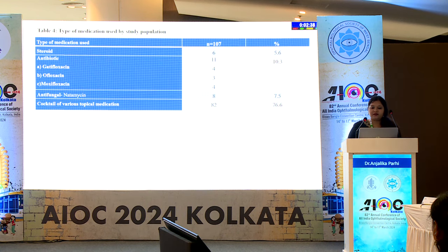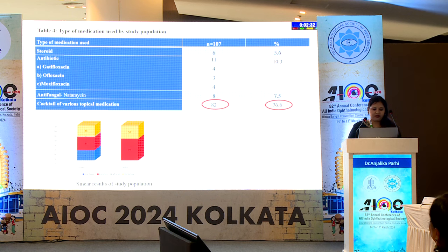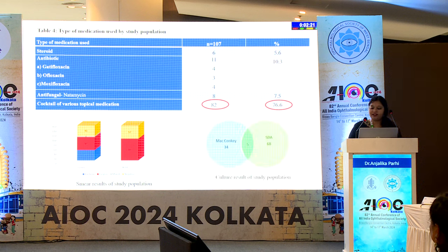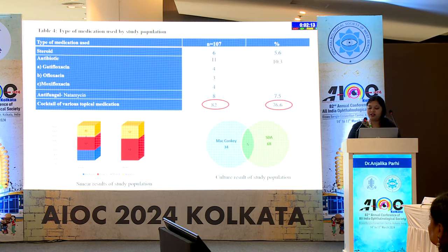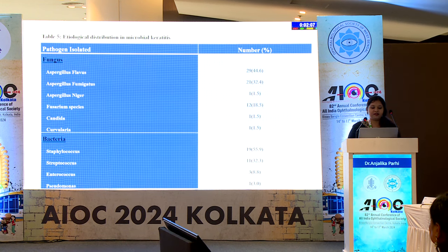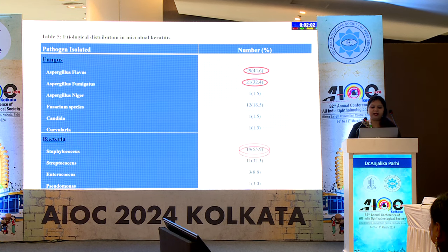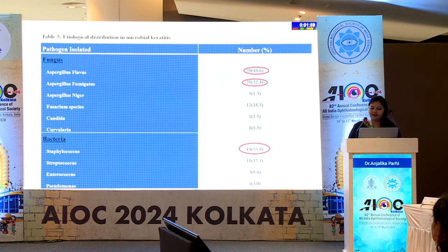More than 76% of patients had applied topical medication before coming to the centre. Gram stain positivity for bacteria was found in 45 cases and for fungus in 57 cases; KOH was positive for fungus in 95 cases. Bacterial culture was positive in 34 cases and fungal culture in 68 cases; 5 cases showed mixed bacterial and fungal infection. The most common fungus isolated was Aspergillus flavus followed by Aspergillus fumigatus, and the most common bacterium was Staphylococcus followed by Streptococcus.